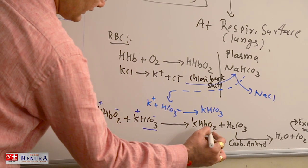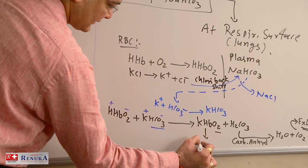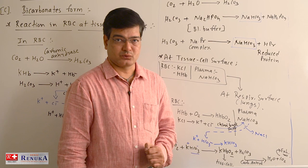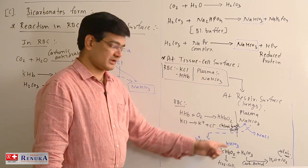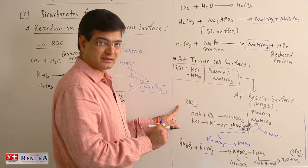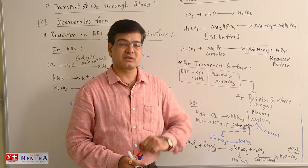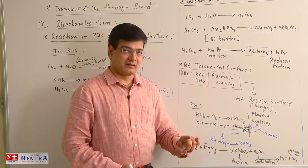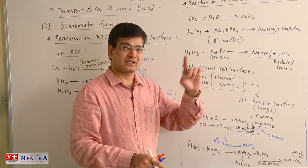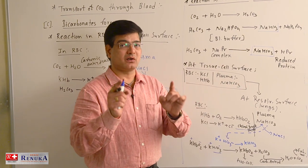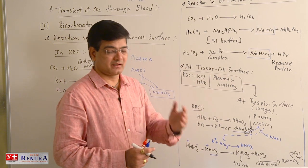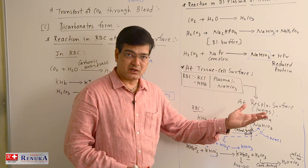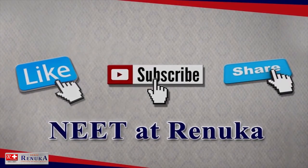KHbO2 transports oxygen towards the tissue cell again, and this is how the transport of carbon dioxide is carried out. The entire process occurring in the RBC at the respiratory surface was first observed by Haldane. This removal of carbon dioxide when oxygen enters the blood at the respiratory surface is collectively called the Haldane effect. Simply put, the Haldane effect is the loading of oxygen and unloading of carbon dioxide at the respiratory surface. Thank you.